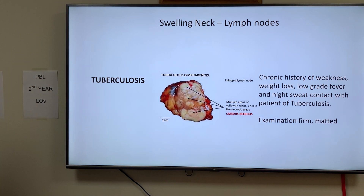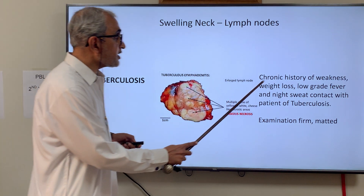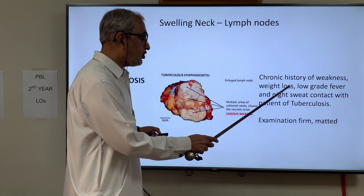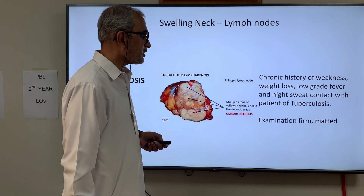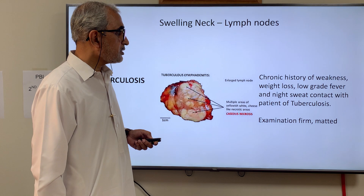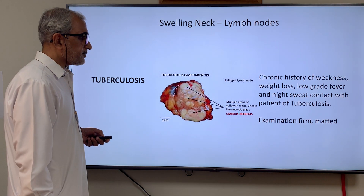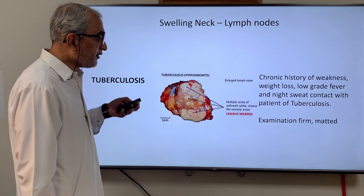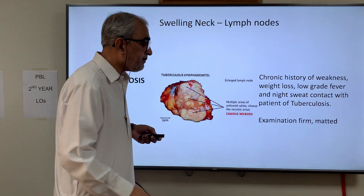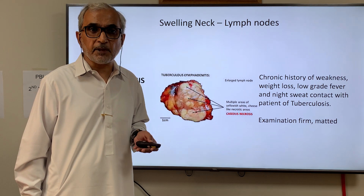For tuberculosis: if a patient gives a chronic history of weakness, weight loss, low-grade fever, night sweats, and contact with a patient with tuberculosis, think of tuberculous lymphadenopathy. In this case the lymph nodes are firm and matted — multiple lymph nodes stuck together.